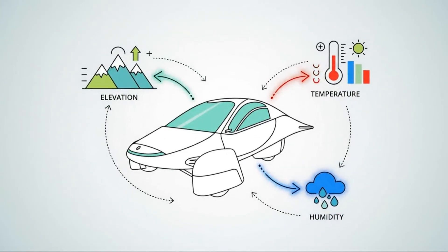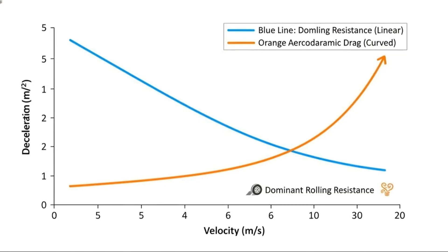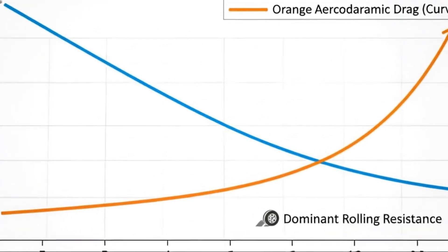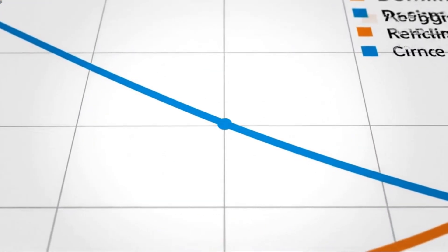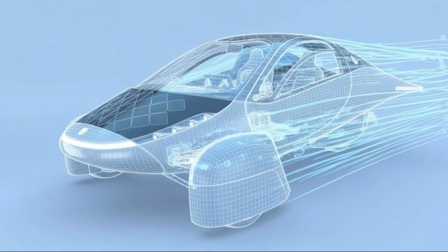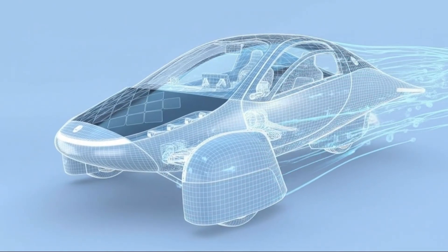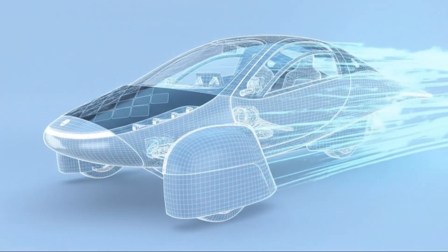At 100 watt-hours per mile, energy suddenly stretches much further. A 100 kilowatt-hour battery no longer means good range, it means 1,000 miles. Even a much smaller battery can comfortably deliver hundreds of miles, redefining what long-range actually looks like.